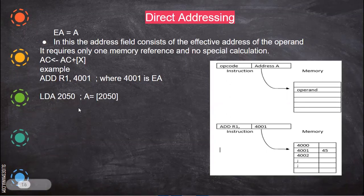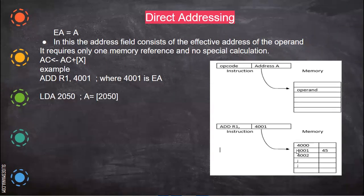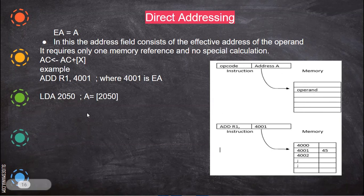LDA 2050 is a three-byte instruction: one byte for the opcode and two bytes for the 16-bit address 2050 (each byte being 8 bits). After execution of the statement, we go to memory location 2050 — suppose 2050 is at some location — and the data present at that location is transferred to the accumulator.